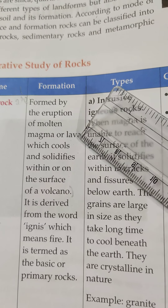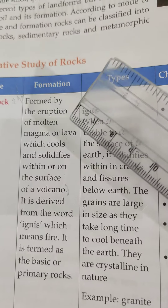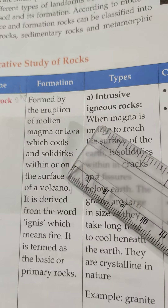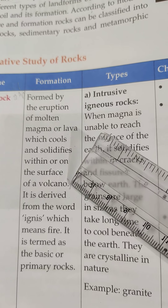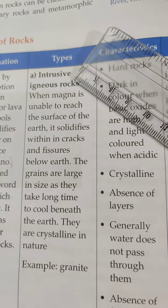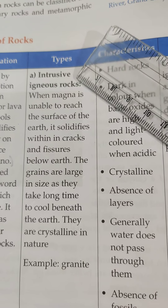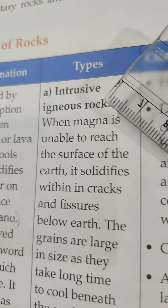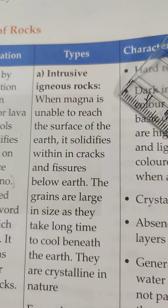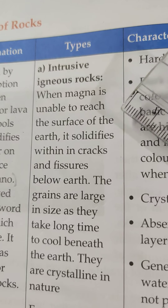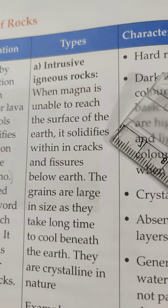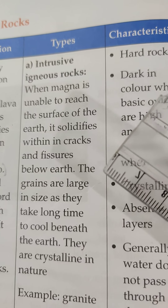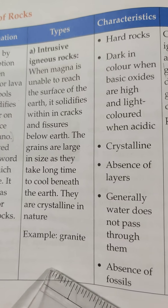Igneous rocks are formed by the eruption of magma or lava from a volcano, which cools and solidifies either within or on the surface of a volcano. They are of two types: intrusive igneous rocks and extrusive igneous rocks. Intrusive igneous rocks are formed when magma is unable to reach the surface of the earth and solidifies within the cracks below the surface. For example, granite.